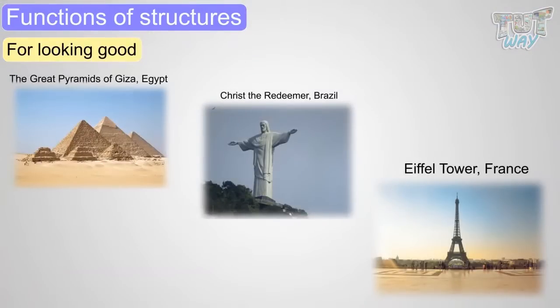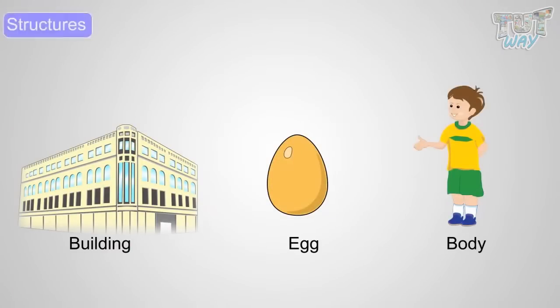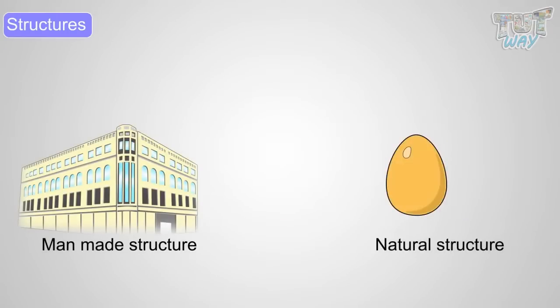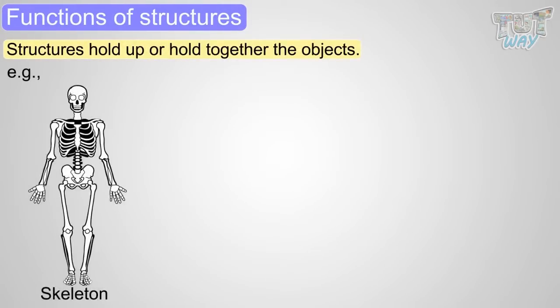So kids, let's revise what we learned. We learned that a building, an egg, a body are all structures. Structures can be man-made or natural. We learned that structures hold up or hold together the objects. Examples: our skeleton, our skin, or a hanger.